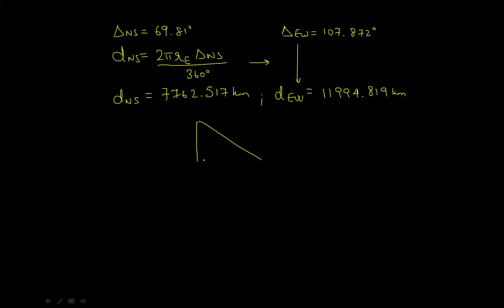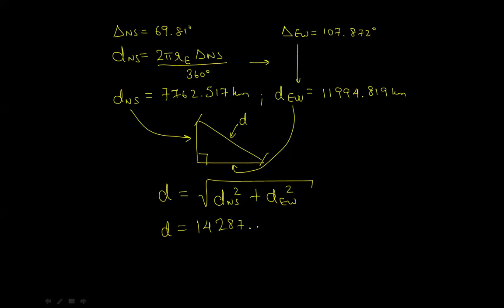Now again, if we consider the Pythagorean triangle, we have DNS as this distance and DEW as this distance, and we will calculate this using the Pythagorean theorem. This distance d will be equal to the square root of DNS squared plus DEW squared. If you go through that calculation, the distance will come out to 14,287.489 kilometers.